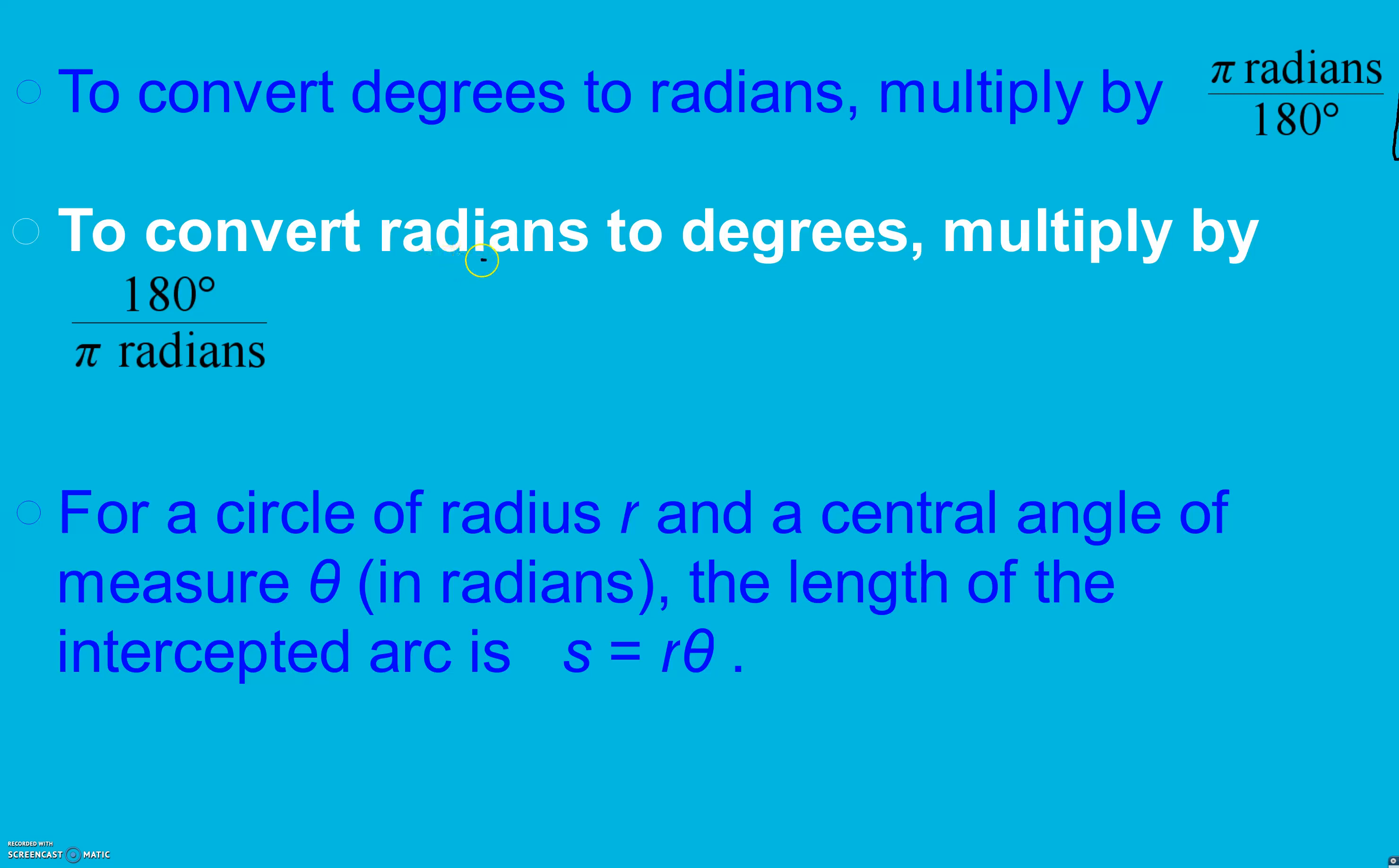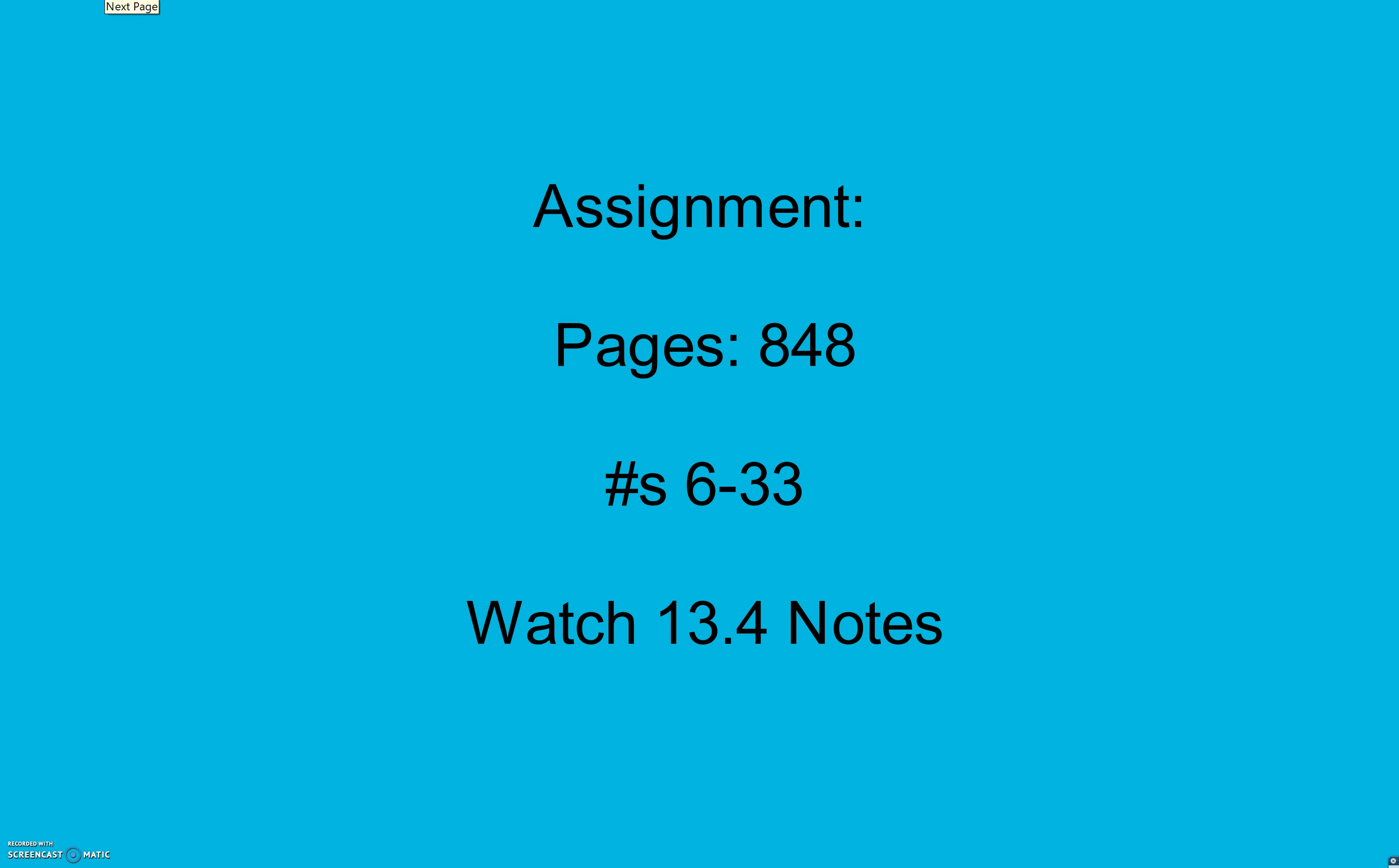It depends on what we have. If we have radians, radians goes on the bottom and we're looking for degrees. If we have degrees, degrees go on the bottom because we're looking for radians. For a circle of radius R and a central angle of measure theta in radians, the length of the intercepted arc is S equals R theta. We have to convert to radians if it's given in degrees or rotations like we just talked about. And here is your assignment for 13.3.